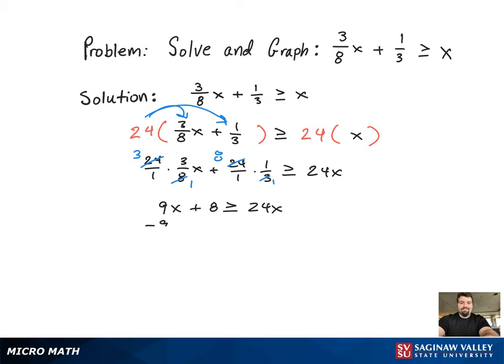Now we just need to get the constants to one side and the variables to the other. Now that that's been accomplished, all that's left to do to get x by itself is to divide by 15.